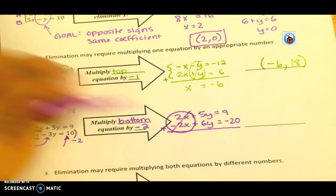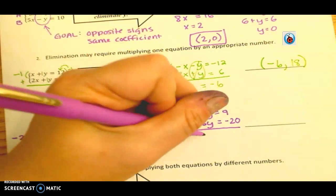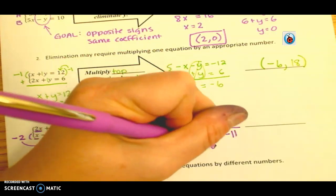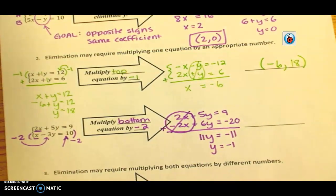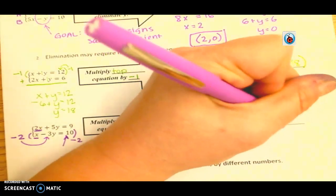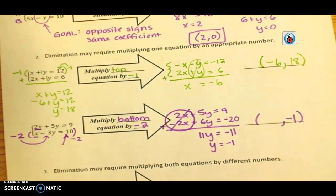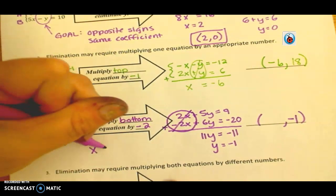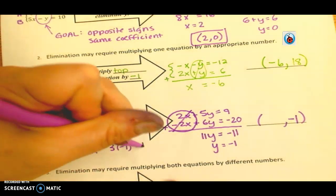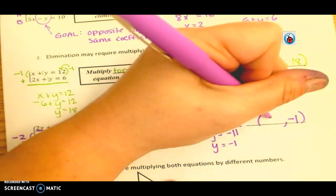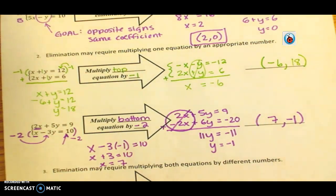And always double check to make sure you did do the opposite. Positive 2, negative 2, yes, those cancel out. Positive 5, positive 6. That is 11y. 9 minus 20. Negative 11. Y equals negative 1. Okay? So in that case, I got my y value. And then I would go back. And I would find my x value that way. So really quick. I'm going to use the second equation. x minus 3 times negative 1 equals 10. x plus 3 equals 10. x equals 7. There we go. Okay?